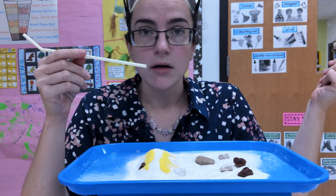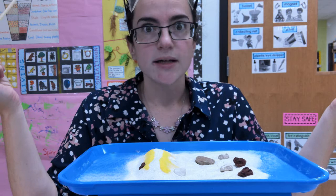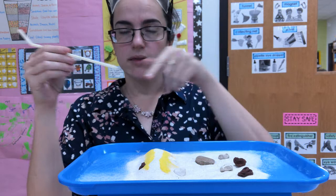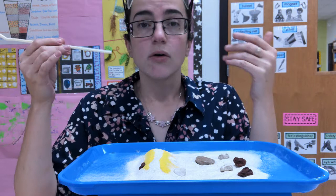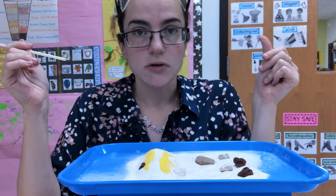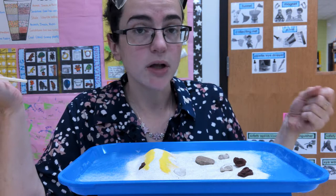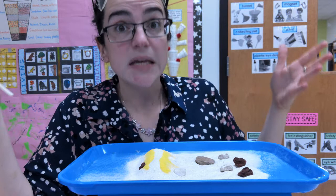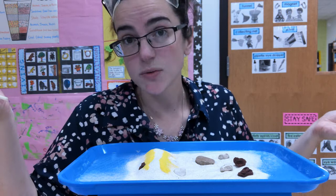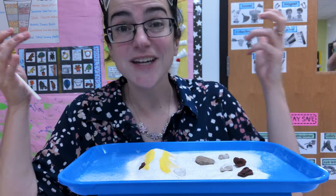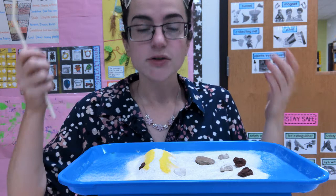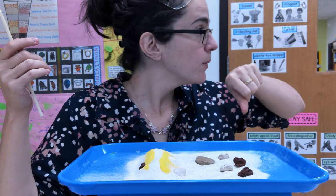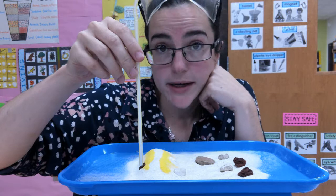We're going to be using a straw. You could do this activity with a fan or a blow dryer, but that is very intense wind. Right now we have controlled wind with our straw. You need to be aware of how soft or how hard you're blowing through your straw. If you practice on the back of your hand: a soft blow you can barely feel it, a medium wind is a little stronger, or a hard wind — you can feel and hear it — and that's going to be too intense for this activity. I'm going to do more of a soft to medium wind.